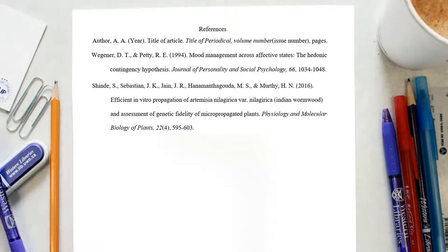If your article has between three and seven authors, list by last names and initials. Commas separate author names, with the last author's name preceded again by an ampersand.